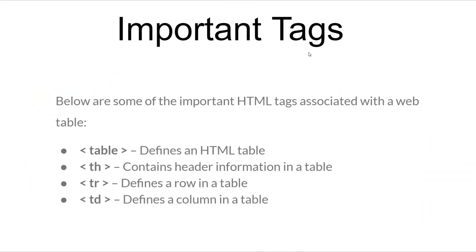Now, let us see what are the different types of tags which are important to understand about the web table. The major web table tags are: 'table', which defines that this is a web table in a web page; then the 'TH' tag, which represents the header row of a web table; then the 'TR' tag, which represents the normal rows of the web table that have data in them; and the 'TD' tag, which represents the columns of the web table.